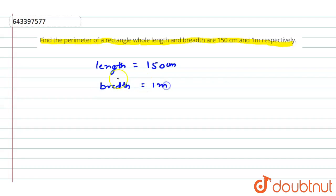So first of all we have to convert the length to meters. As we all know that 100 centimeter is equal to 1 meter, so from here 1 centimeter is equal to 1 by 100 meter.